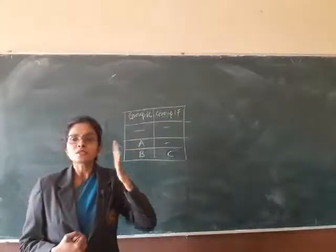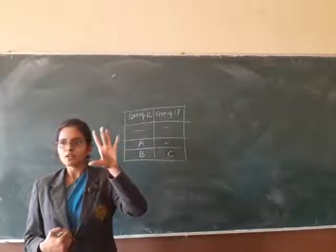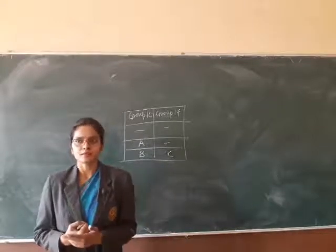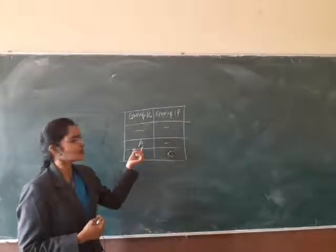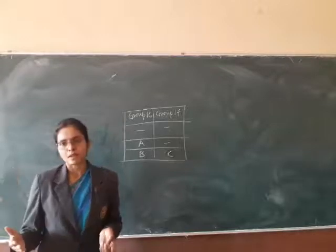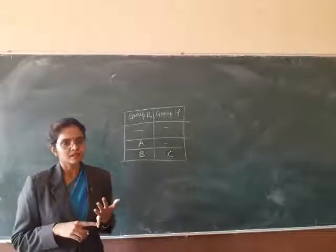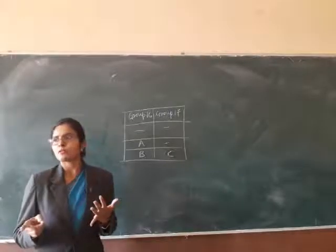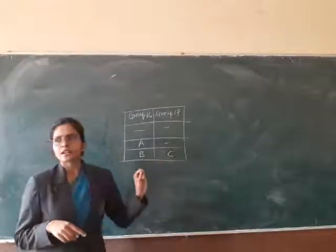Group 16 के members भी non-metal होते हैं, तो A क्या होगा? Non-metal होगा। आपको पता होना चाहिए कि कौन-कौन से group के elements metal हैं, कौन से non-metals हैं। Group 15 के भी non-metals होते हैं, like nitrogen। Group 13 आता है तो वो metals हैं। Group 14 आता है तो non-metals हैं और कुछ metalloids भी हैं। 15, 16, 17 के सारे के सारे non-metals हैं।